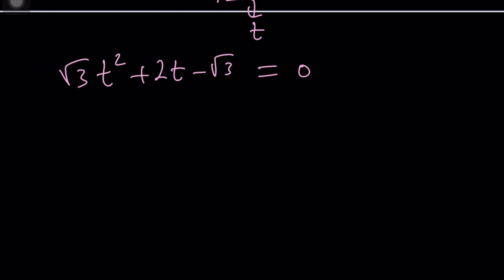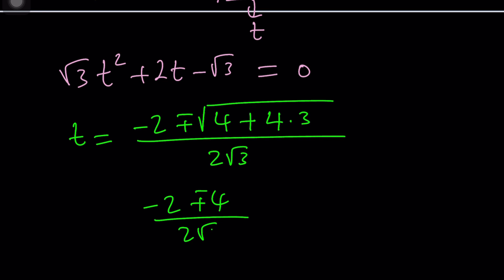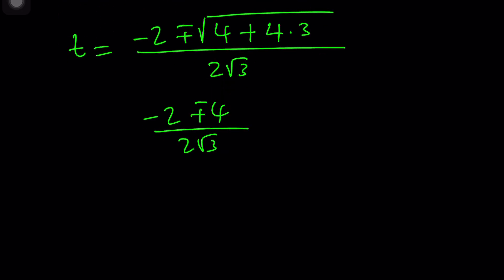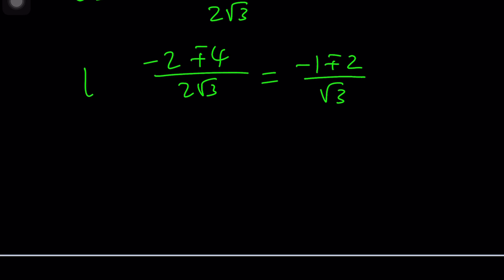Now t from here is going to be negative b plus minus the square root of b squared which is 4 plus 4ac. That's going to be a 3 and then we divide it by 2 root 3. So this is 4 plus 12, 16, negative 2 plus minus 4. I probably made a mistake somewhere. When you divide everything by 2 you get negative 1 plus minus 2. I probably put a plus minus 1 there.